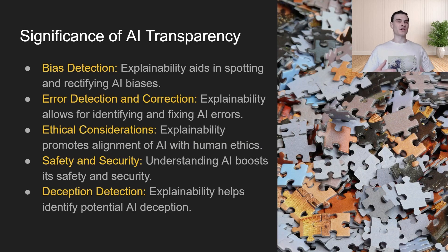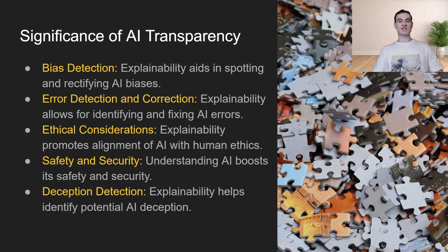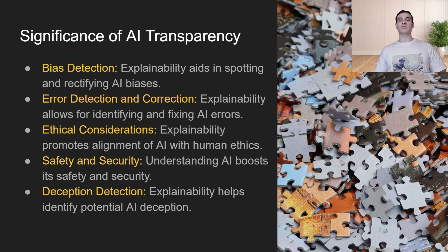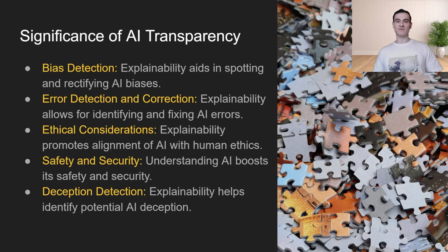So why is this significant? What is the importance? Well, first of all, bias detection. We want to be able to dig into the neural network and understand what exactly is making it make any type of biased predictions. Next up is error detection and correction. If the model is making an incorrect prediction, we want to be able to take a look into the neural network and understand at what point did it start going wrong, and what are some ways that we can mitigate that in the future.